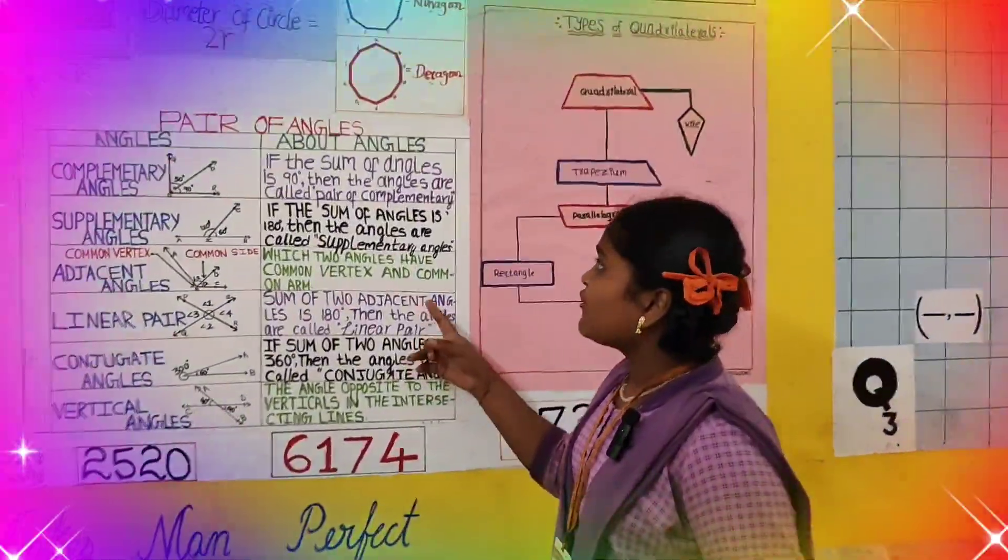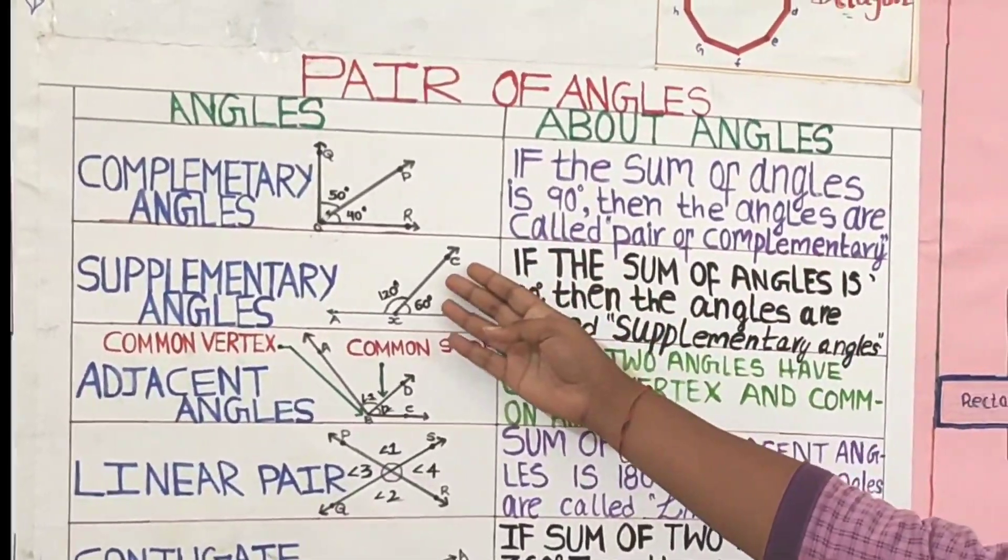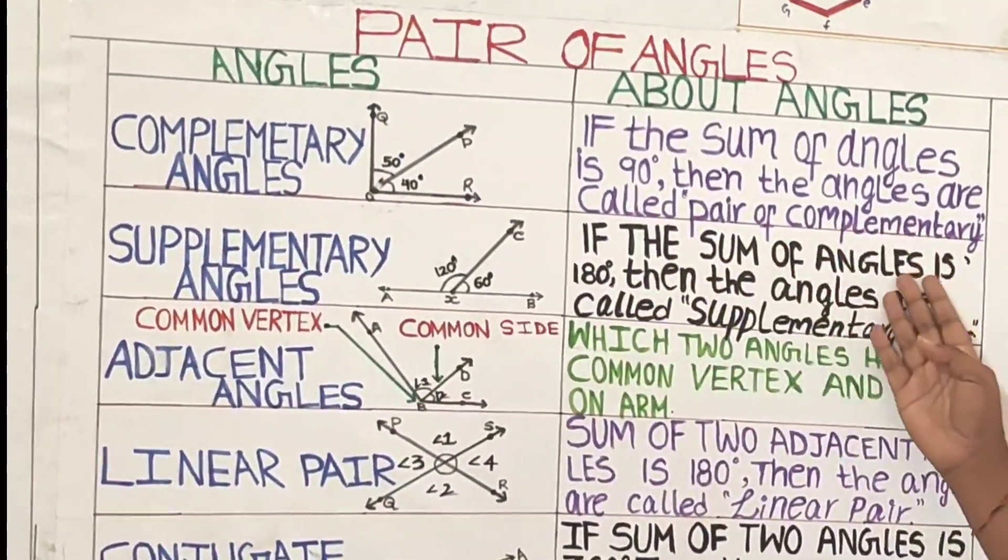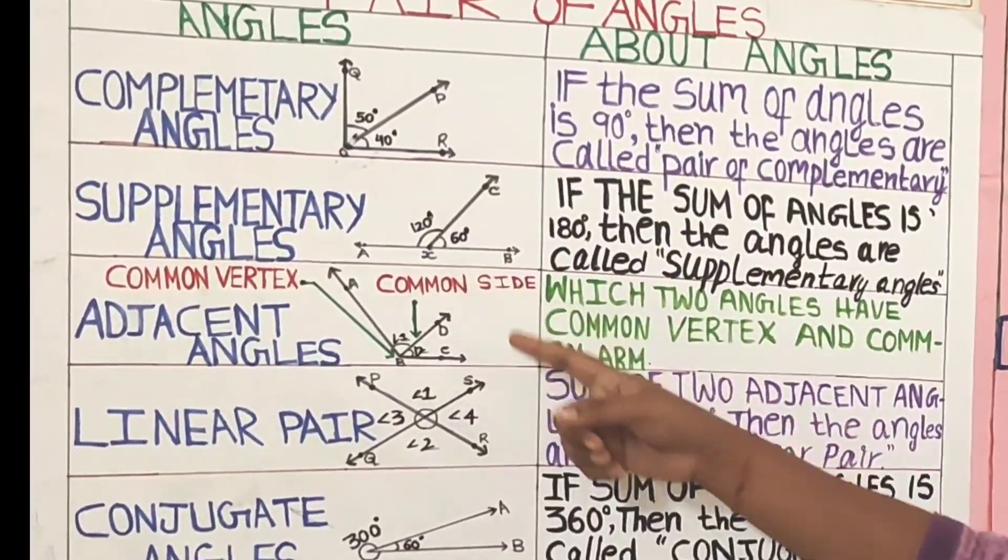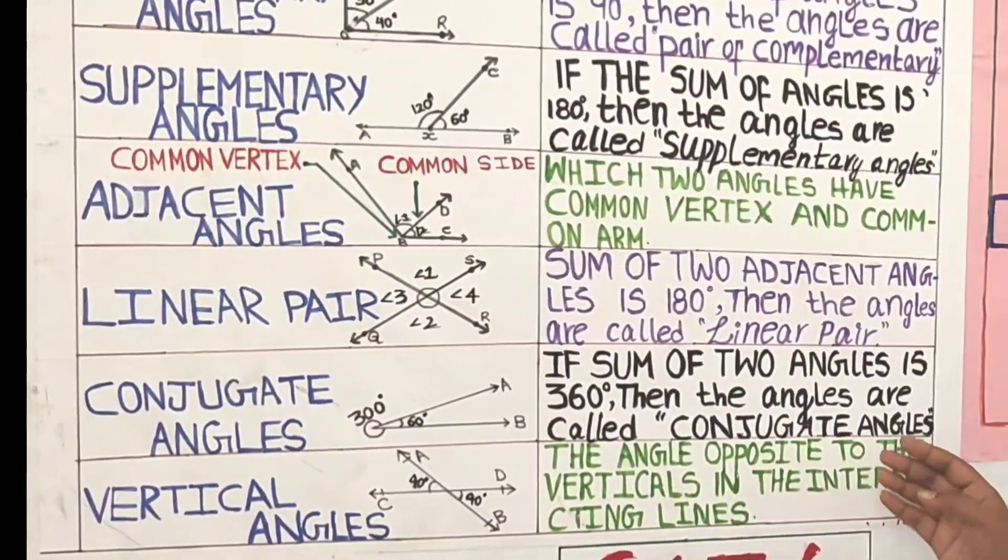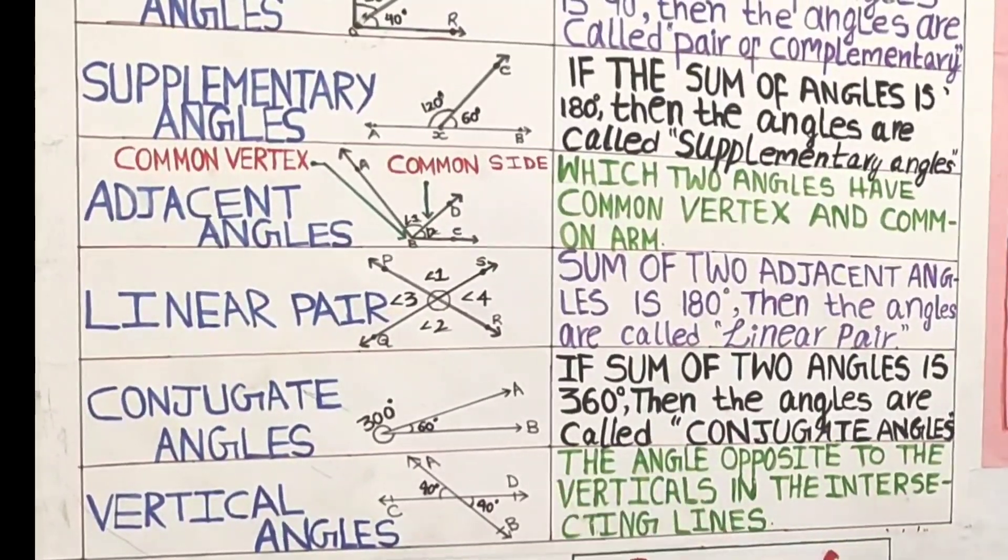This is a pair of angles. If the sum of angles is 90, then the angles are called complementary angles. If the sum of angles is 180 degrees, then the angles are called supplementary angles. The angles opposite to the vertices in the intersecting lines are called vertical angles.